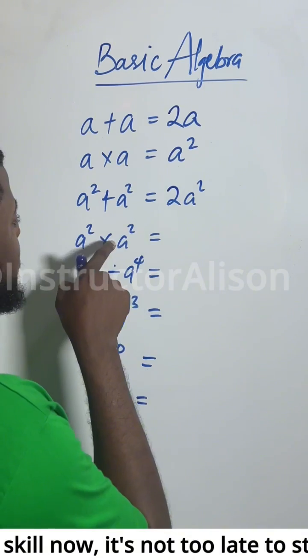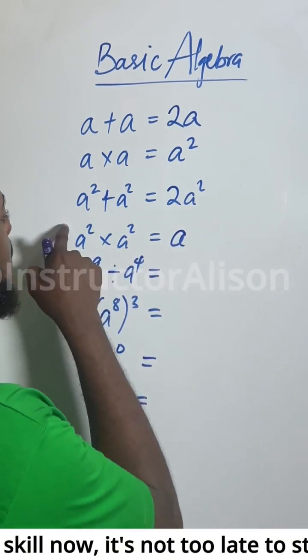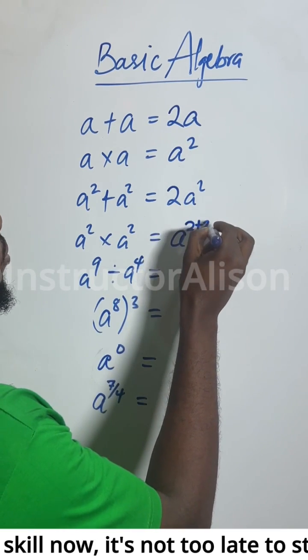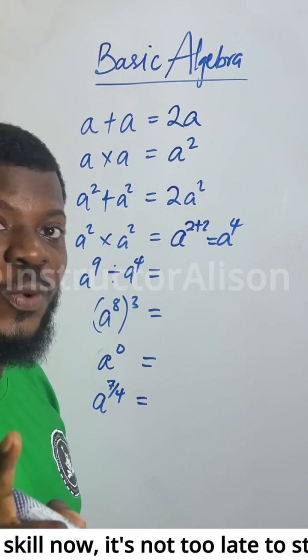Then we have A squared times A squared. We will create product law of indices. When the base are the same, take one of the base and then add the powers, 2 plus 2. And that will give you A to the power of 4.